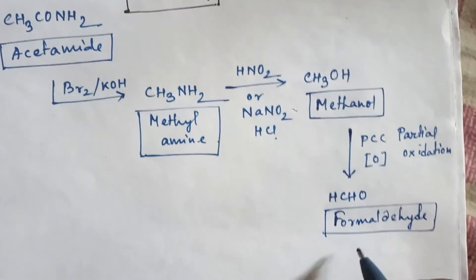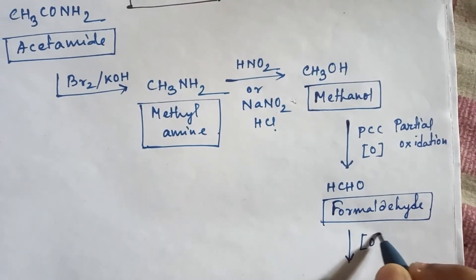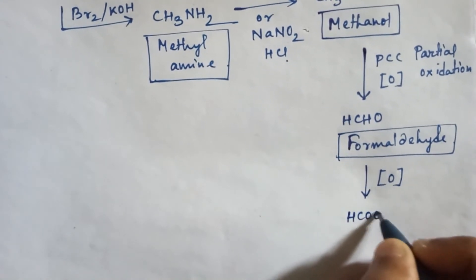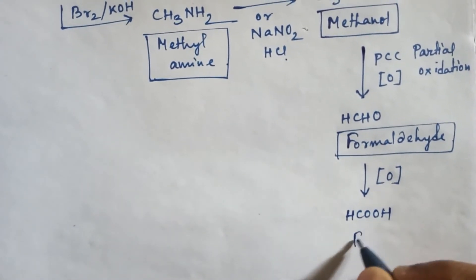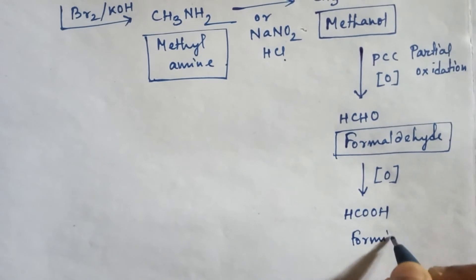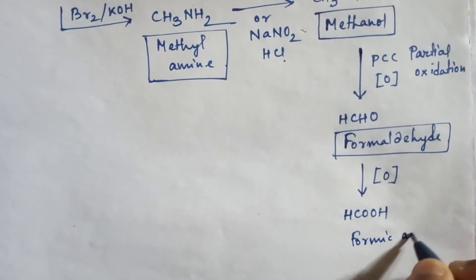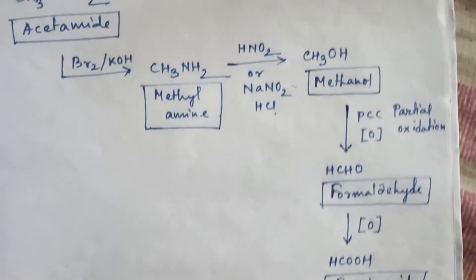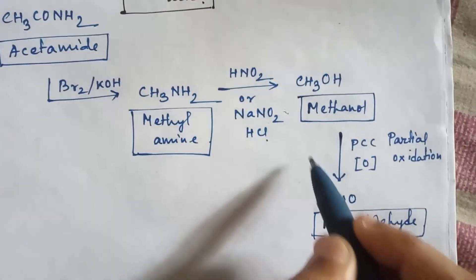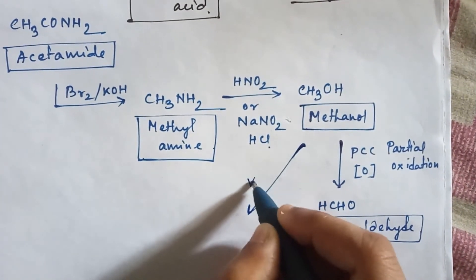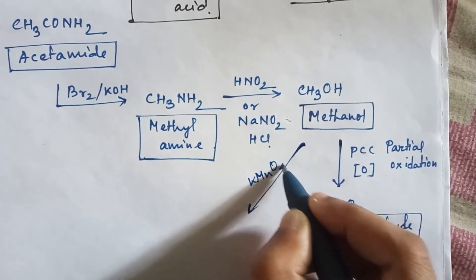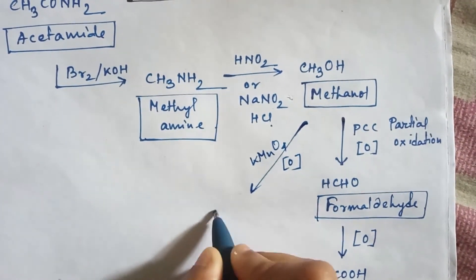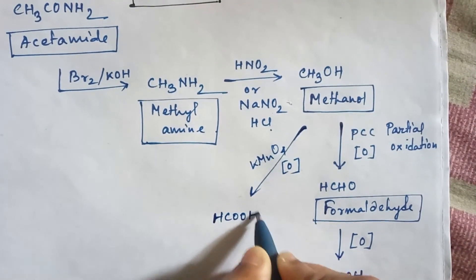Now again do oxidation — formaldehyde converts into formic acid, HCOOH, which is our desired product. Alternatively, you can also do full oxidation by using KMnO4, and you will also get formic acid.